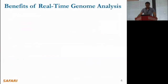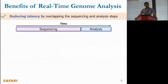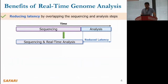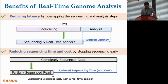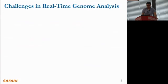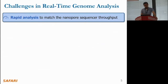Real-time genome analysis provides two important benefits. First, we can overlap the sequencing time with the analysis time, reducing the latency of the entire process. Second, we can stop sequencing of a read or the entire sequencing run, which can significantly reduce sequencing time and potentially the cost, making genome sequencing more efficient and cost effective. There are several challenges to achieve real-time genome analysis.